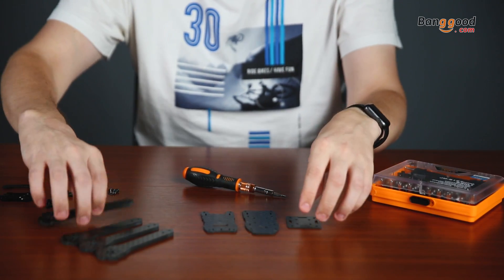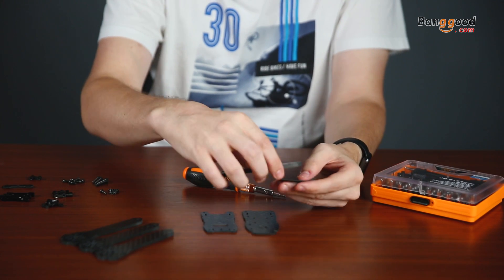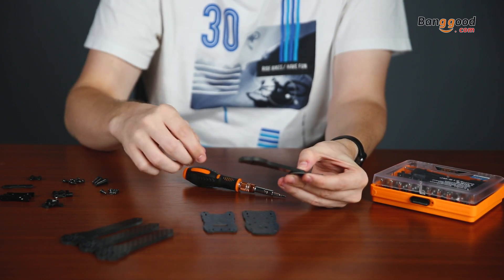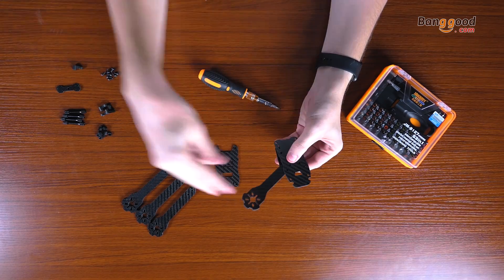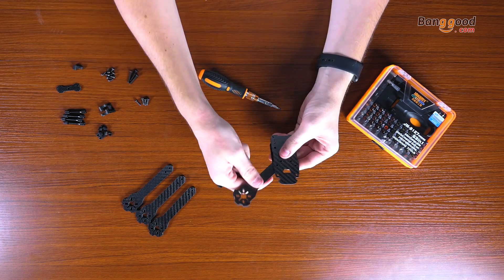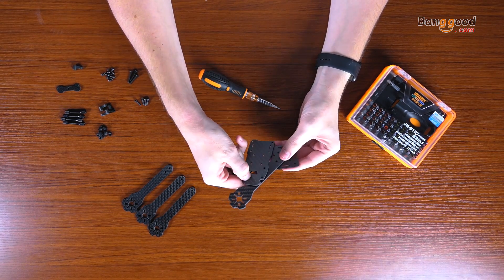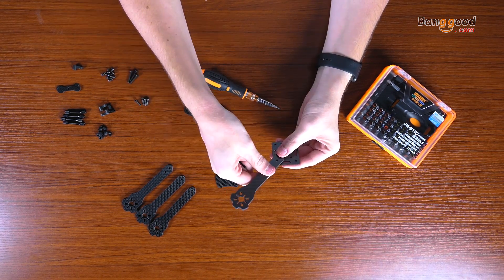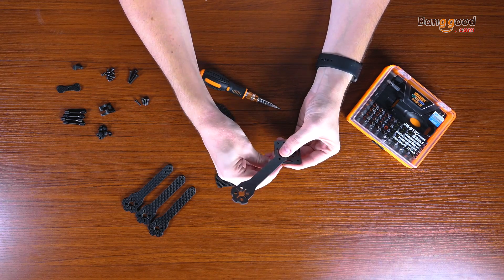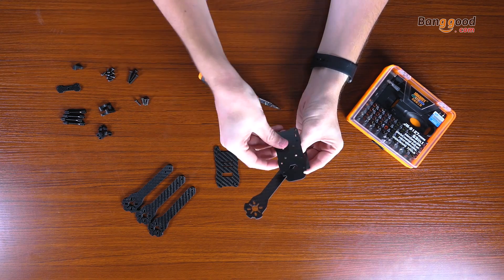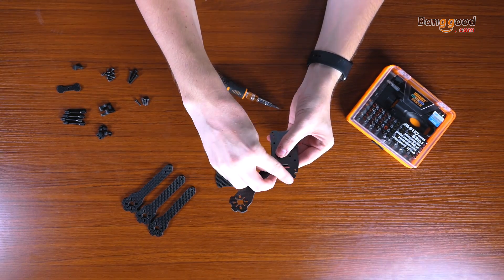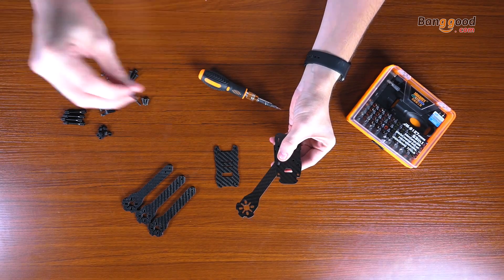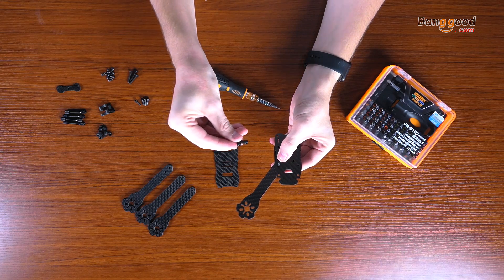First we take the down part, put one of the feet, put the upper part, and to put them together we put the screw through. Make sure you find the right place for the holes and close it by using this.